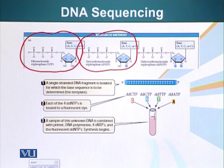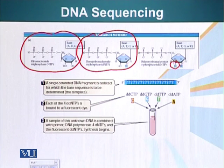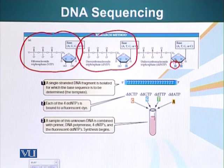As you know, the carbon atom number 3 has the 3' hydroxyl, which is required for extending the DNA chain. If the 3' hydroxyl is not present, a new nucleotide cannot be added to the growing DNA fragment. So we use di-deoxyribonucleosides in a PCR reaction for sequencing. Let's see how that is done.